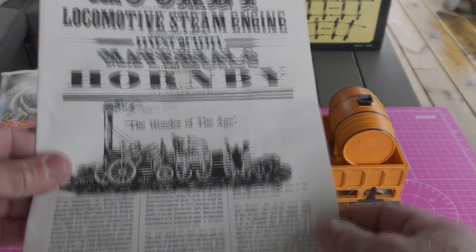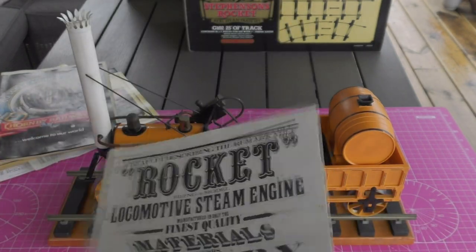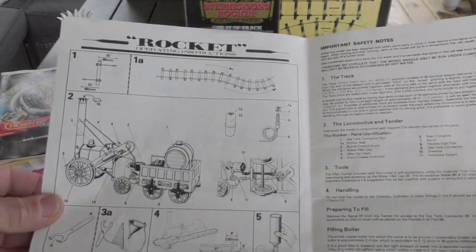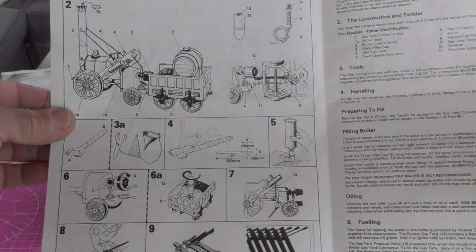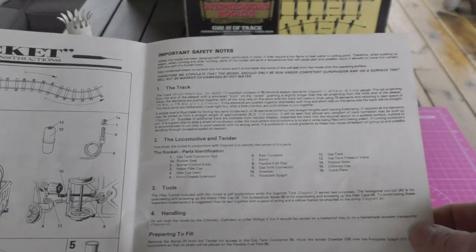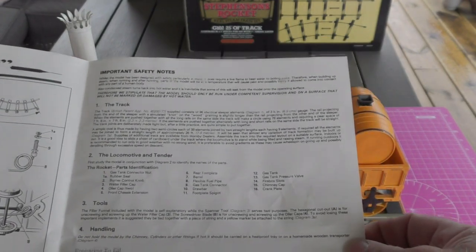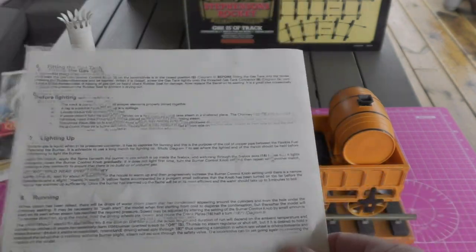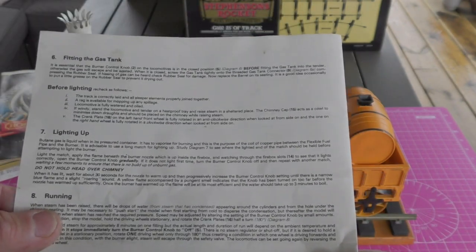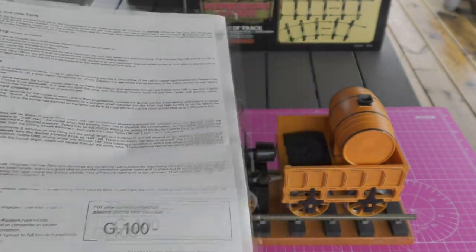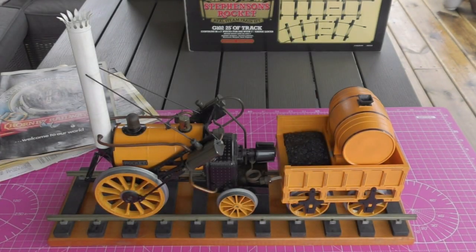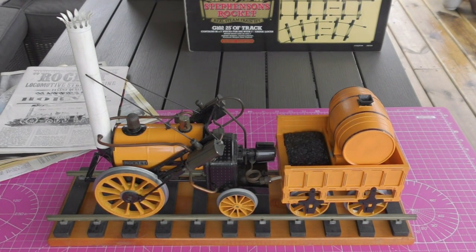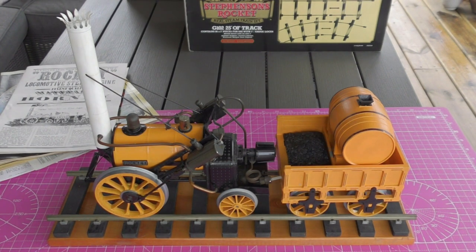I'm not going to go right through them at the moment, we'll refer to them possibly as we get through the model. But lots and lots of information and great stuff there. Tells us all about filling the boiler, oiling, fueling, lighting up. Sounds good doesn't it? A lot to look at. Let's take a look at the items in boxes.